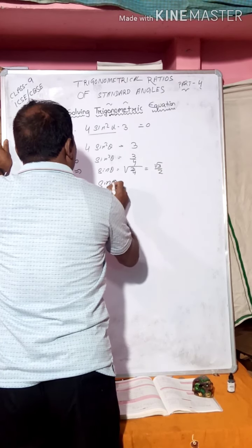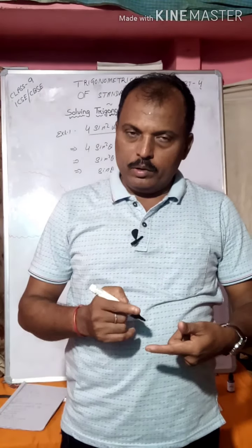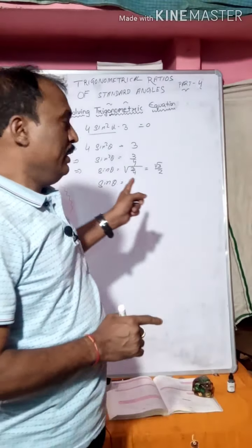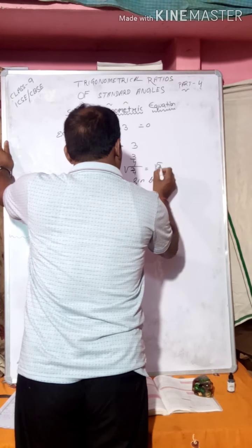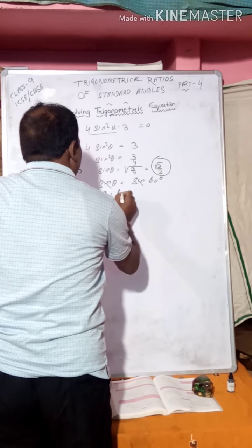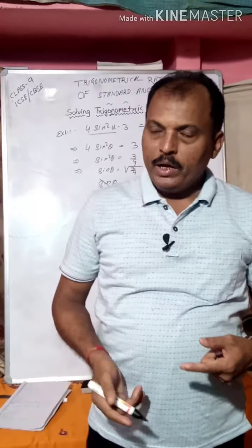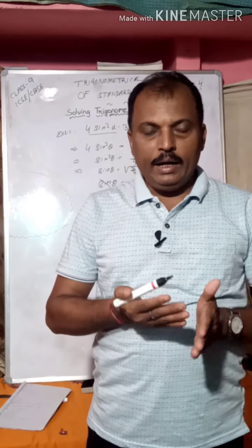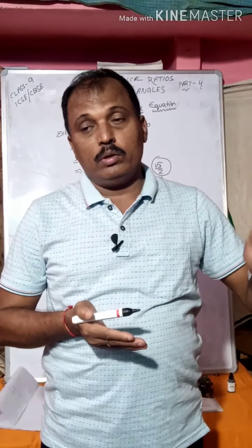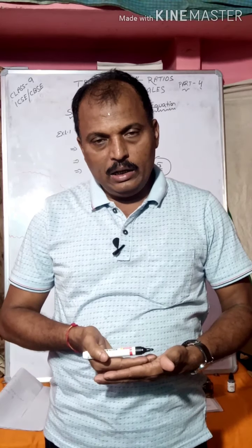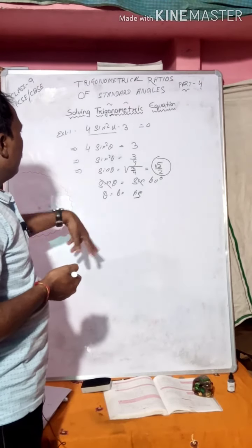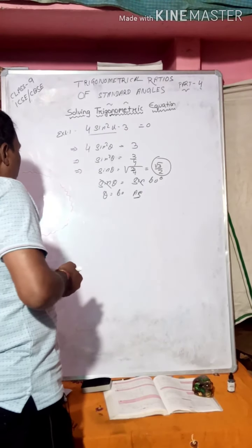So sinθ = √3/2. We know that the standard angle whose sine value is √3/2 is sin60°. So sin on both sides cancels, giving θ = 60°. This is the answer — very simple and easy if you know algebraic simplification and the trigonometric standard ratios for 0°, 30°, 45°, 60°, and 90°. Now come to Example 2.